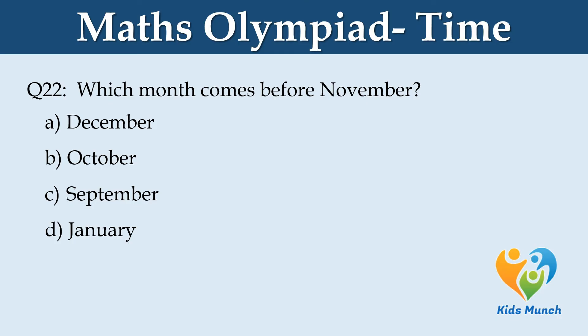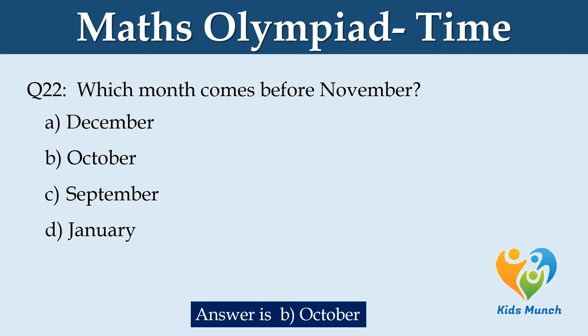Which month comes before November? Option A: December. Option B: October. Option C: September. Option D: January.